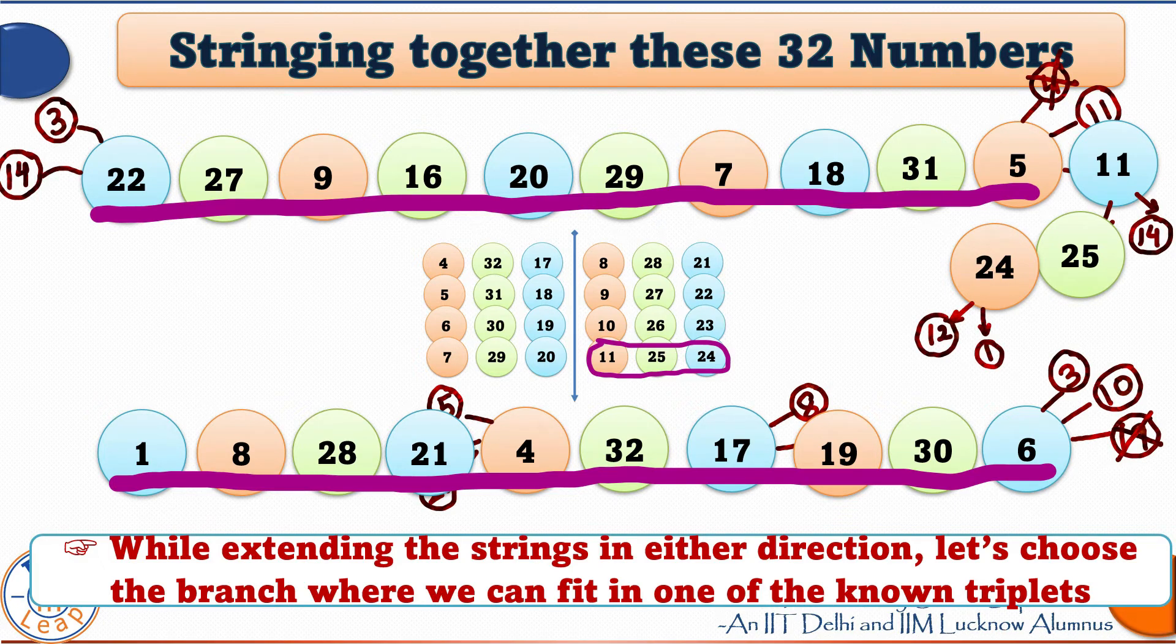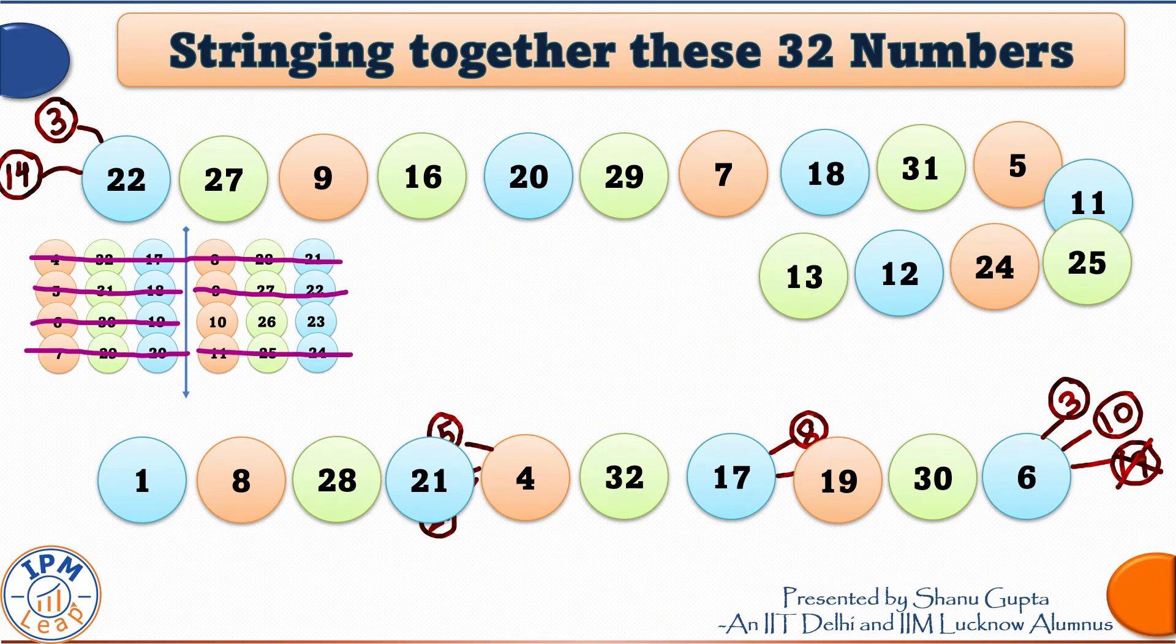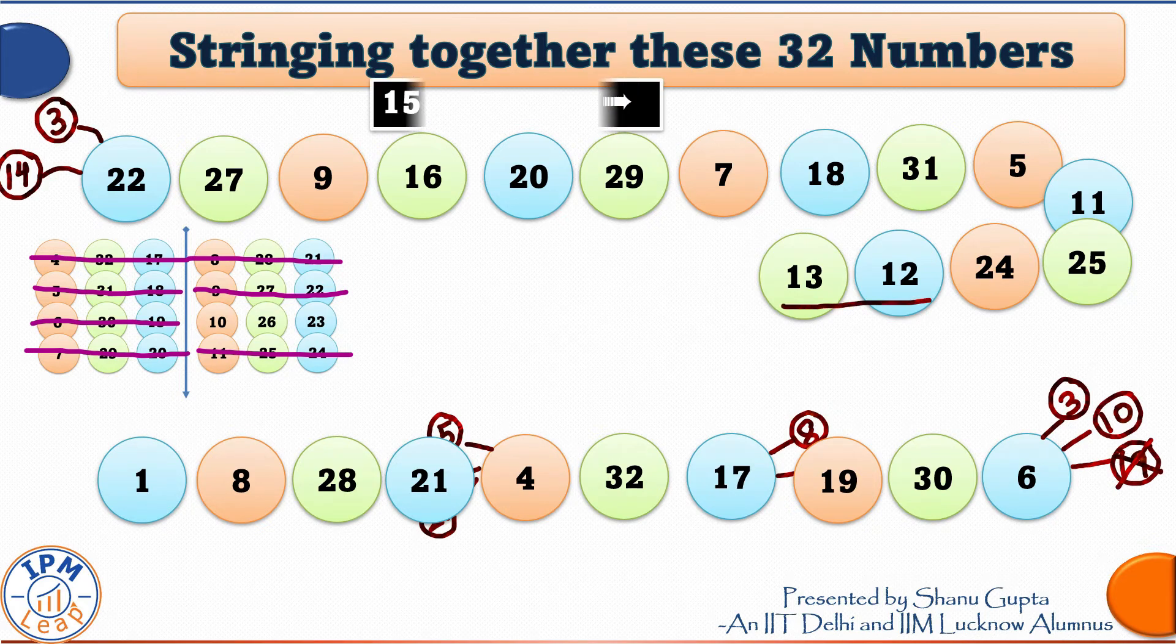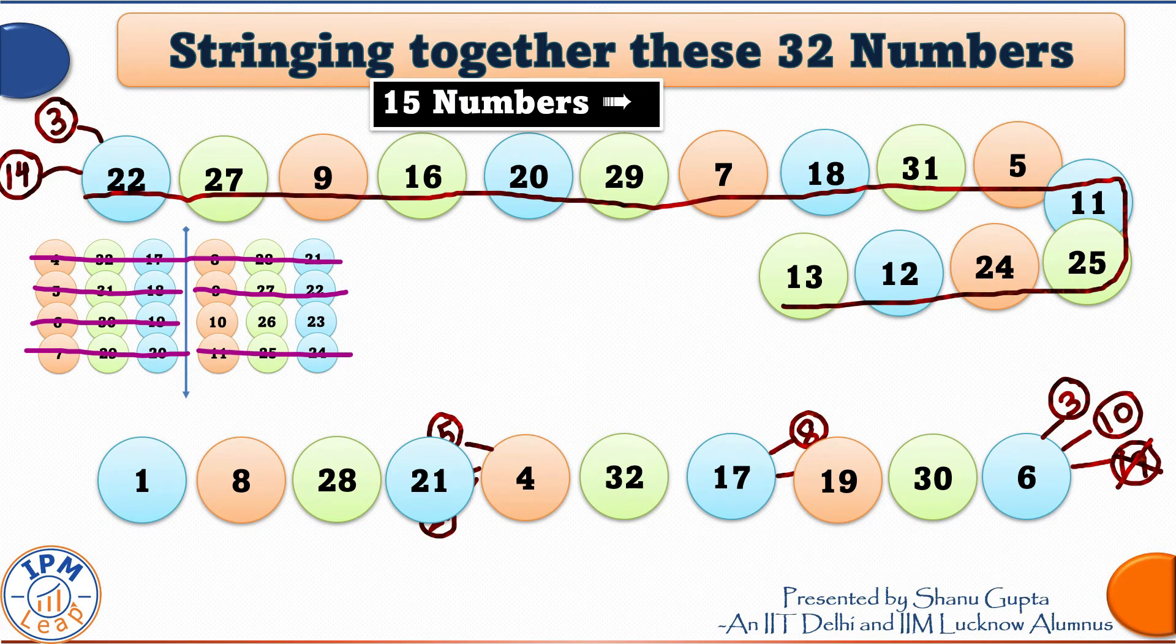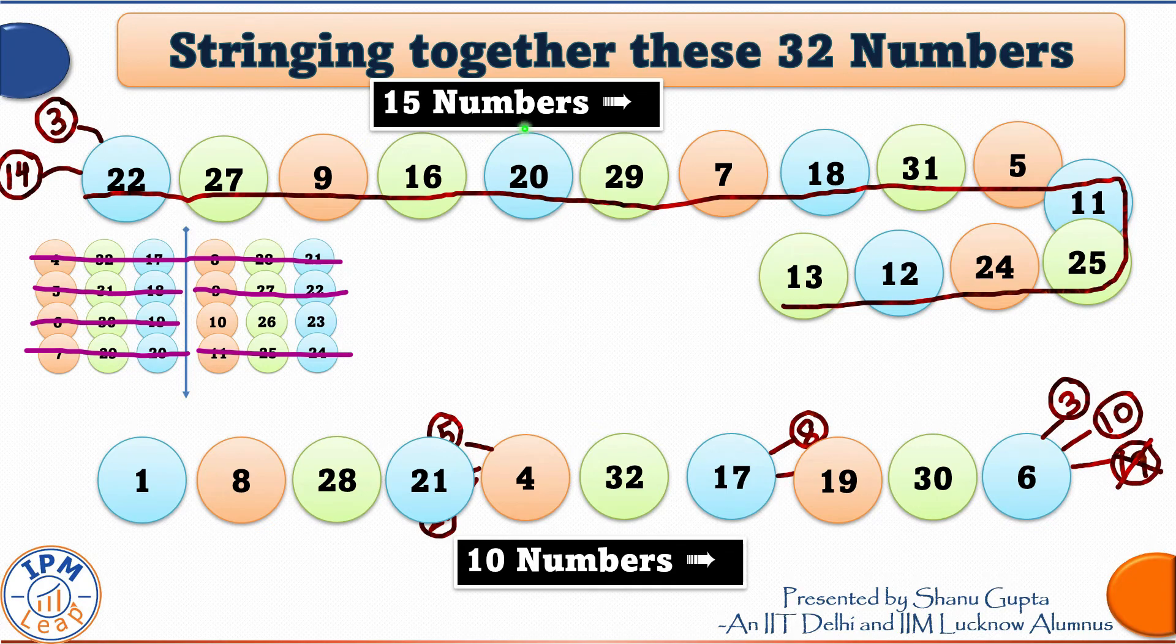12 can be followed by 4 or by the number 13. But guys, 4 is already used up. So, we will add the number 13 here. I would say this is very good progress on the two strings. I already have 15 numbers in the first string and 10 numbers in the second string.